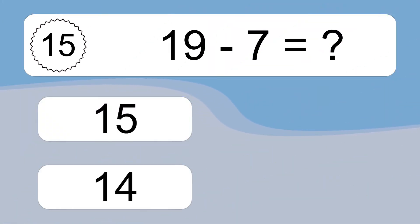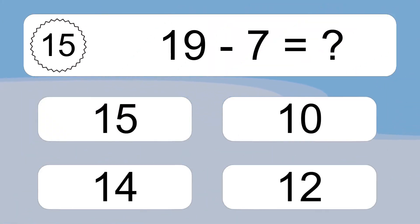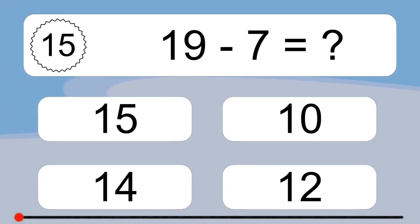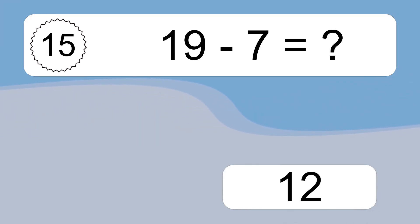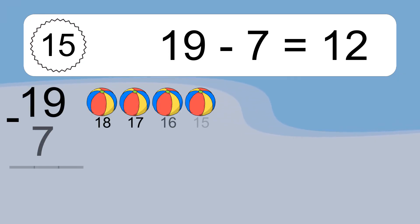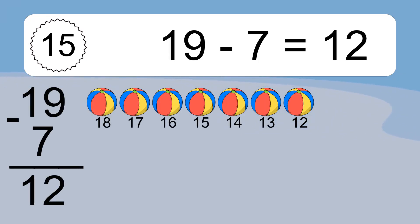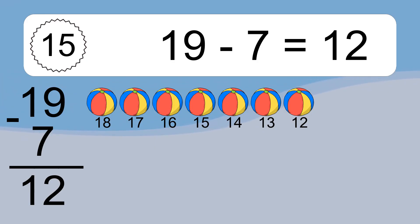19 minus 7 equals what? 19 minus 7 equals 12. Let's count it. 18, 17, 16, 15, 14, 13, 12.